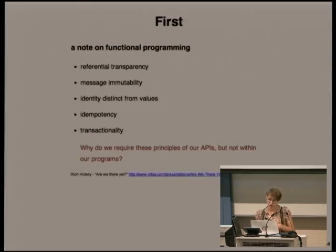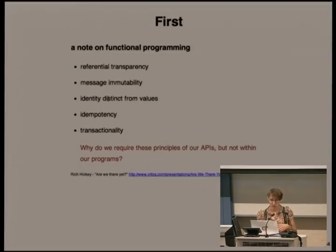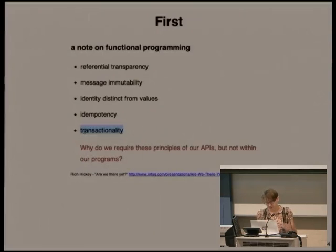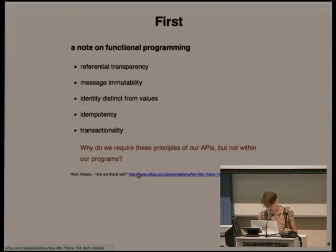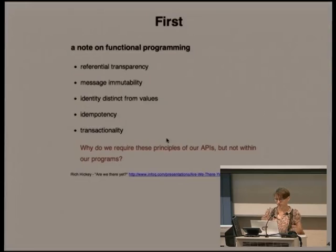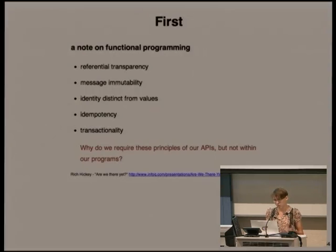Regarding functional programming — people would have picked this up from earlier today. These are properties which generally you would put into an API. If you're designing something like a REST HTTP API, you want data that goes into it to act transactionally. Rich Hickey, in one of the talks where he introduced Clojure, basically said: why do we do this when we design our APIs, but not when we design how our programs actually work internally? Some of these things seem like intrinsically good properties to have.